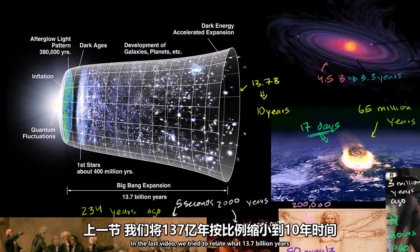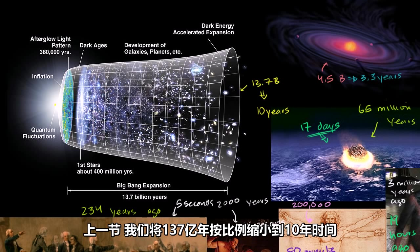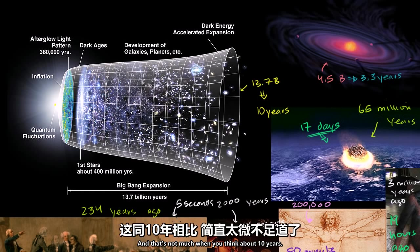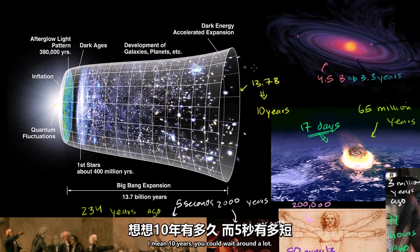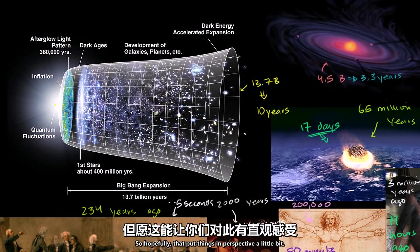In the last video, we tried to relate what 13.7 billion years really means by compressing it to 10 years, which is still a pretty long time, at least from our perspective. We saw that these huge periods of time — everything that's happened since the United States Declaration of Independence — all gets compressed into just five seconds, and that's not much when you think about 10 years. Hopefully that put things in perspective a little bit.